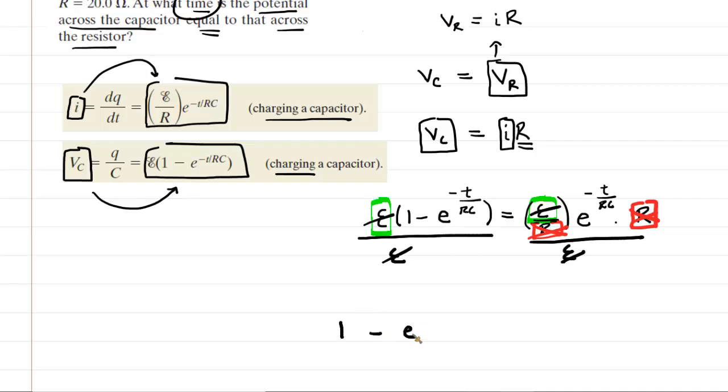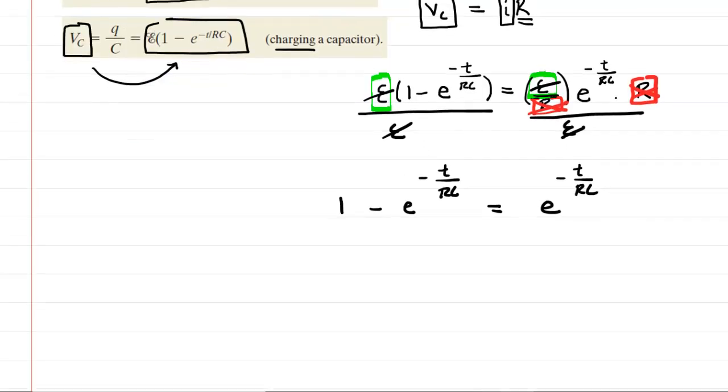We now have one minus E to the negative T over RC on the left side. And this is set equal to E to the negative T over RC on the right side. Now, in the spirit of solving for time, what we'll do next is add that term, that exponential term, to both sides of the equation.